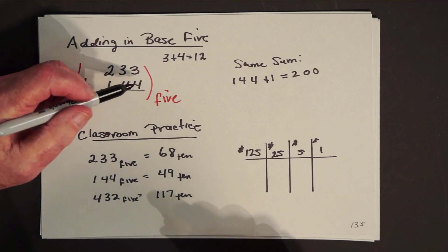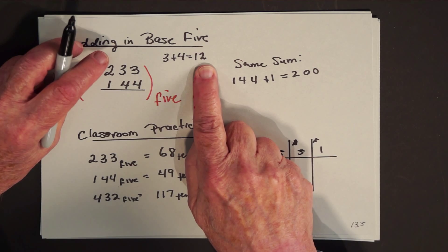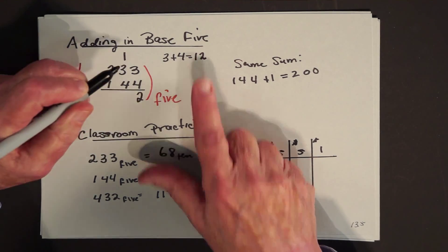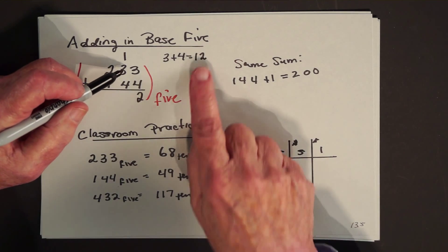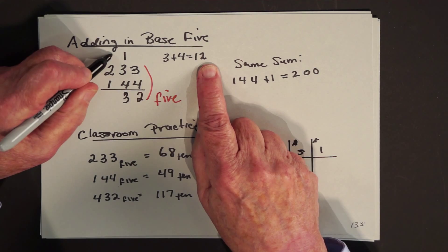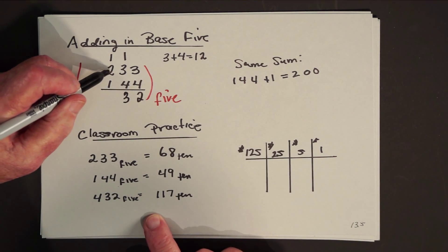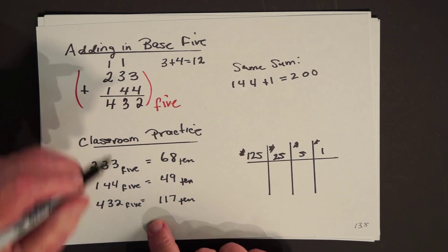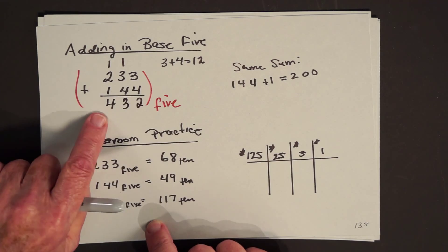And I want to know what the answer is. And using the tables, this is just as mechanical as we do the problem nowadays by rote. What would you say? Four plus three is one two, you can't say twelve. Put down the two and carry the one. Four plus three is one two, and the one that you carried makes this a three. Carry the one. One plus two is three, plus one is four. The answer is four, three, two.